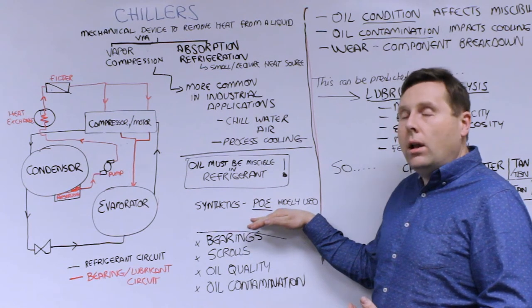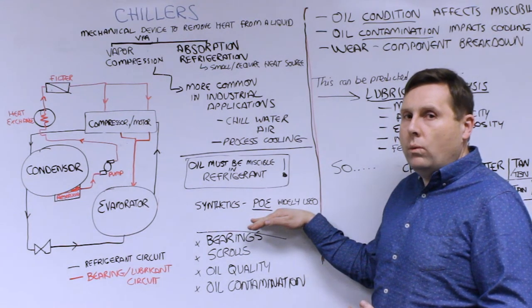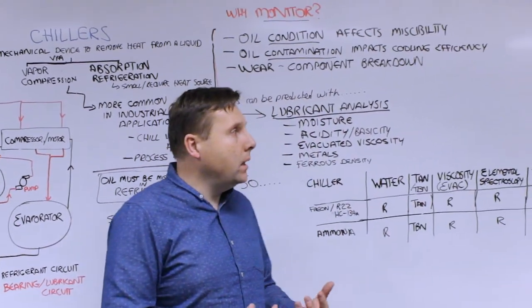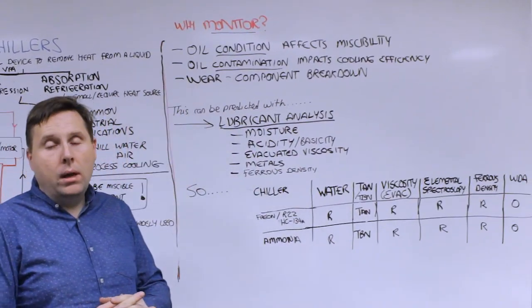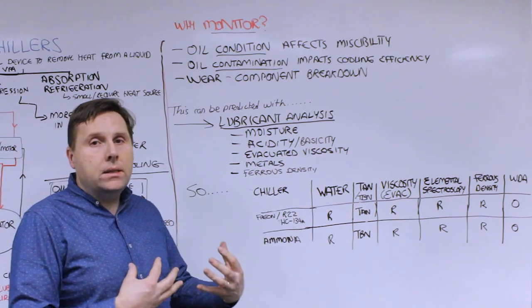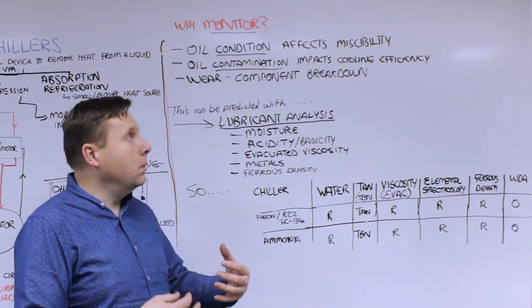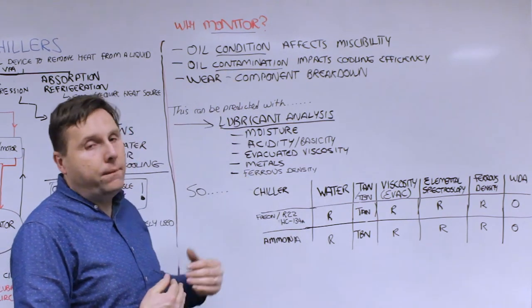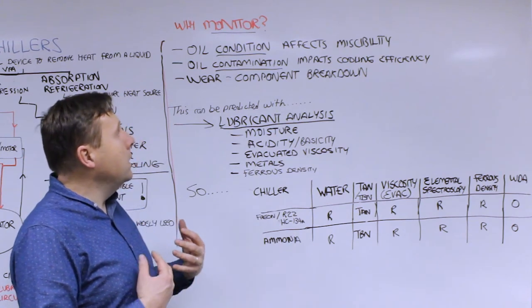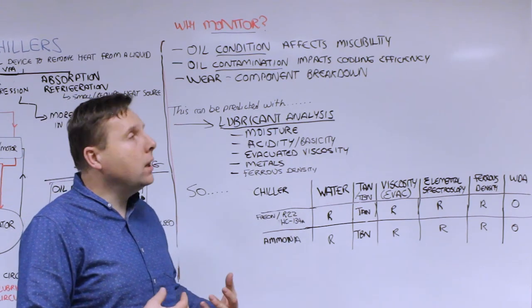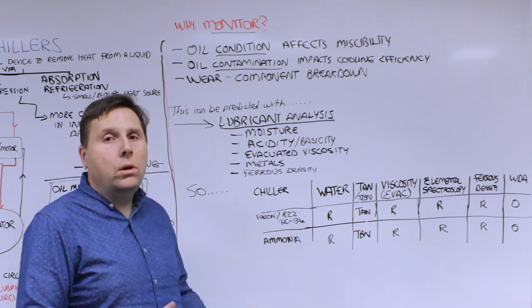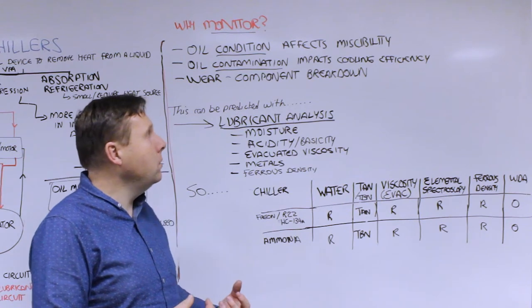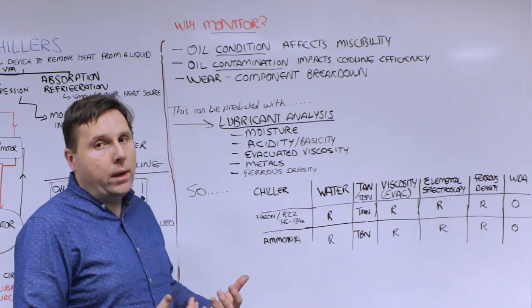Why are we monitoring this? We want to look at the oil condition because since the refrigerant and oil have to be miscible, the condition and type of oil affects that miscibility. In addition, any contamination such as moisture getting into the system affects the cooling efficiency and the ability of the chiller to perform its primary function.